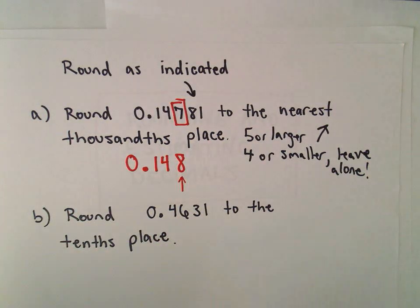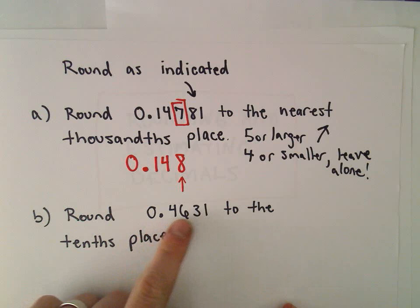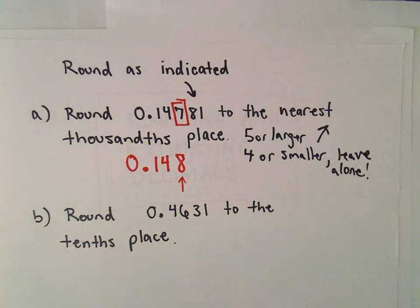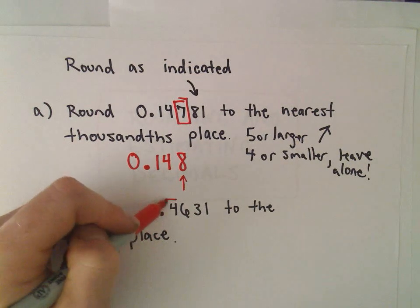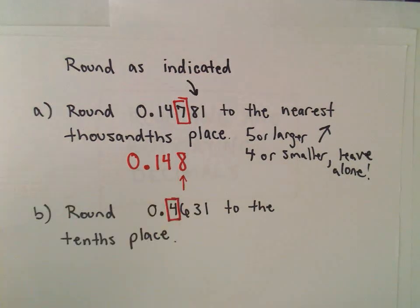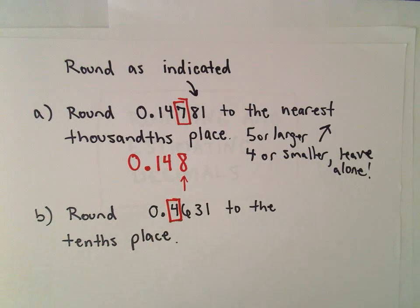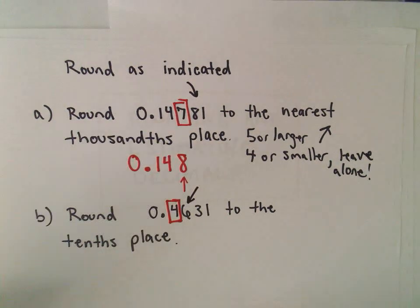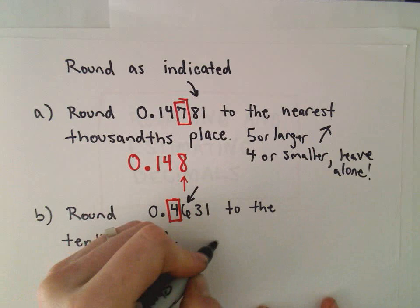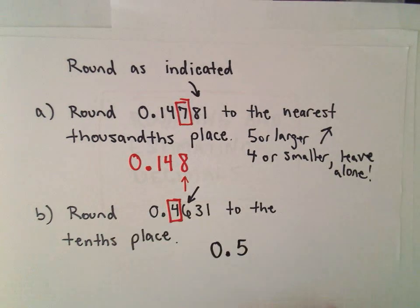In our next example, 0.4631, we're going to round that to the nearest, or excuse me, to the tenths place. Well, the tenths place is the very first digit after the decimal point. And again, we just look one digit to the right. Since this is 5 or larger, we'll round up this number, and the 4 will turn into a 5.